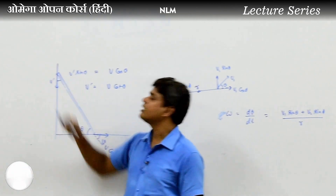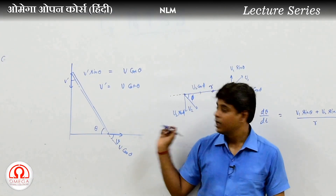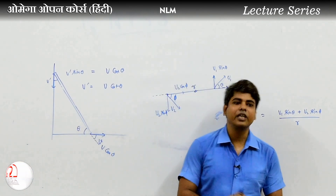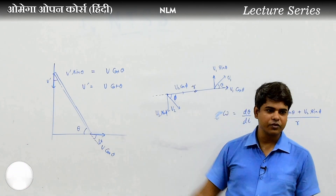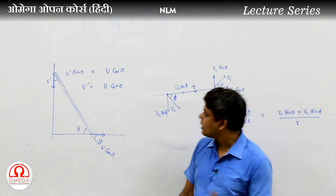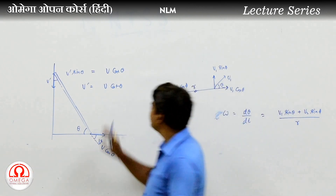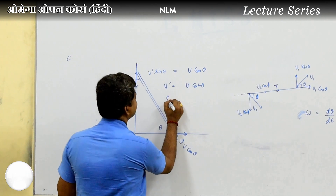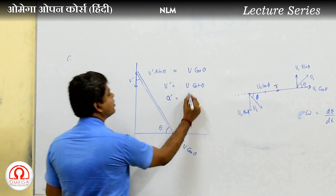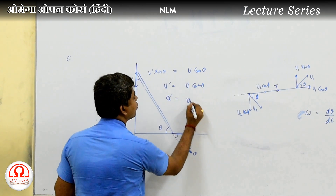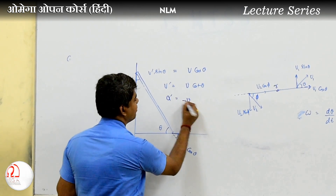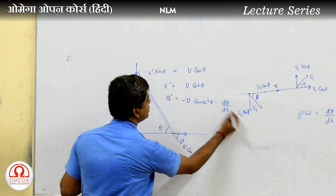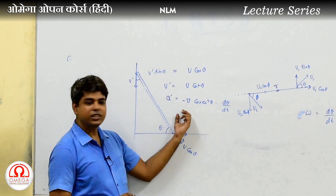Now the next question is: what is the acceleration? What is the acceleration given constant velocity? We have the constraint relation, and we will differentiate it with respect to time to find the acceleration.